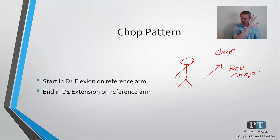Again, it's totally dependent on your reference arm. If the right hand is a reference arm, starting in D1 flexion, going to D1 extension, it's called the chop. And coming from D1 extension with your hand open, all the way up to your ear is called D1 flexion, or the reverse chop. Chop, reverse chop. So again, that's the diagonal we're talking about.